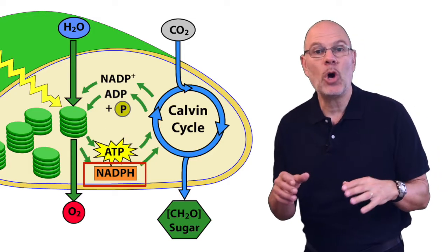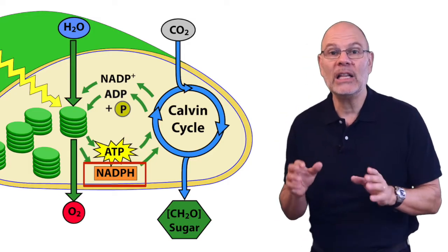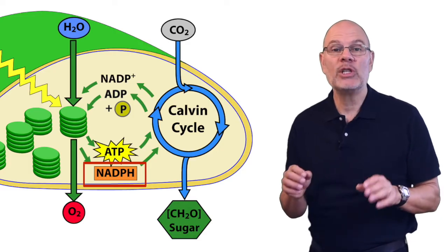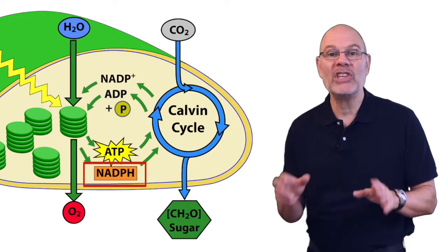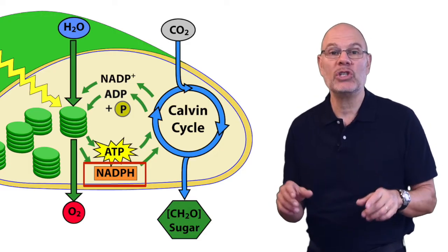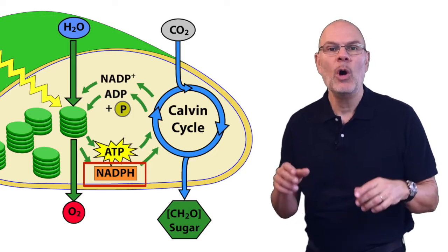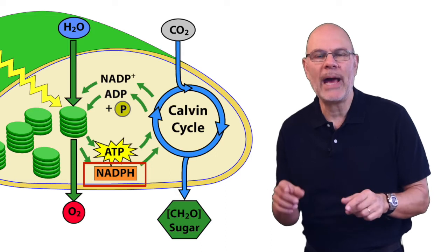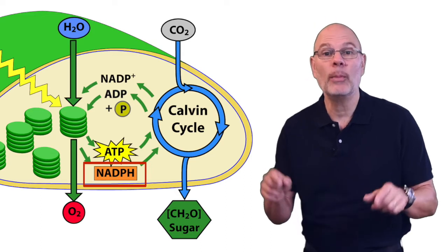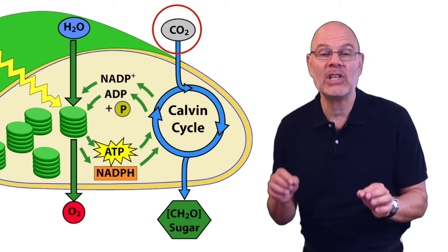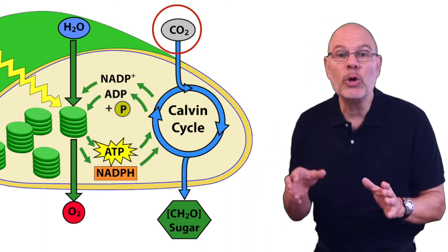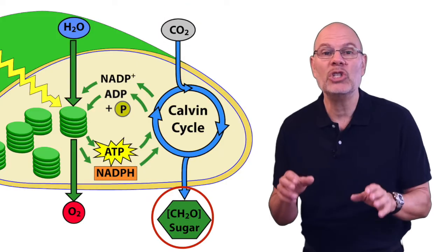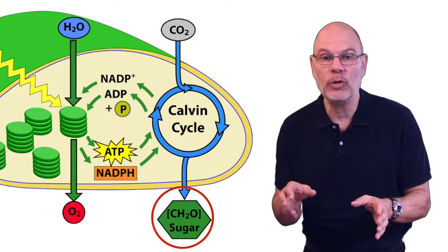NADPH is what's called a mobile electron carrier. Its job is to bring electrons and hydrogens to the stroma, where enzymes use its reducing power to transform carbon dioxide — the third input for the Calvin cycle — into carbohydrate.